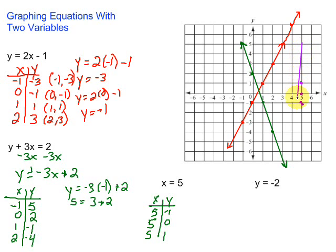If we connect the dots, we see that it's just a vertical line going through 5 on the x-axis. So when we have something where it's just an x, x equals 5 for example, it's going to be a vertical line going through that number on the x-axis.